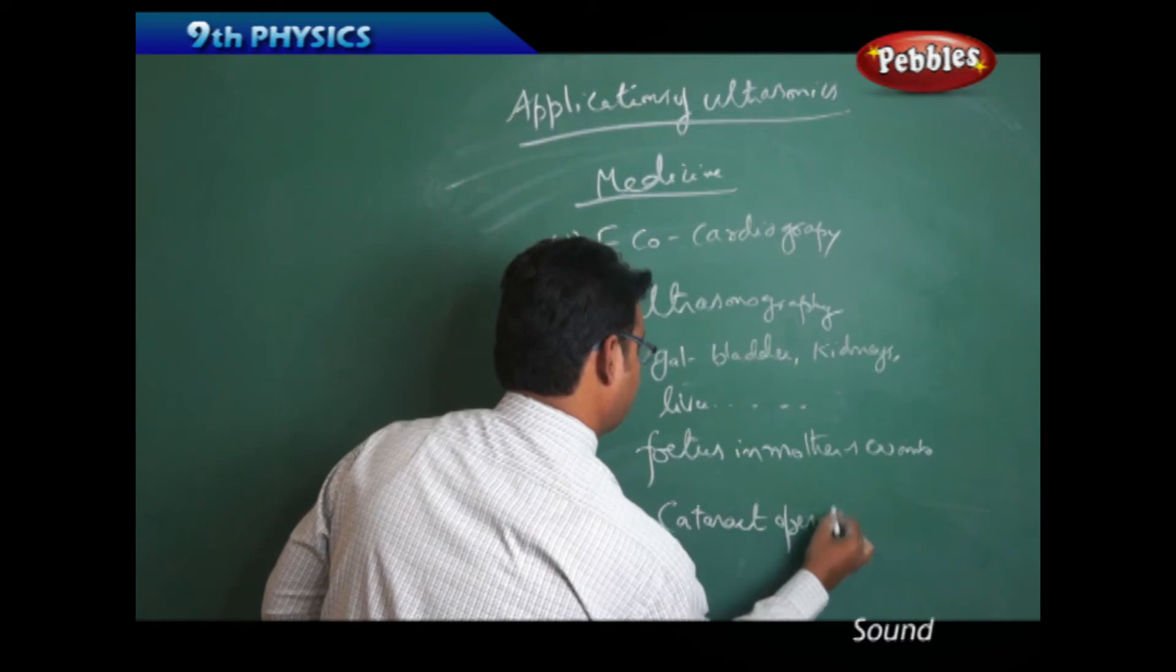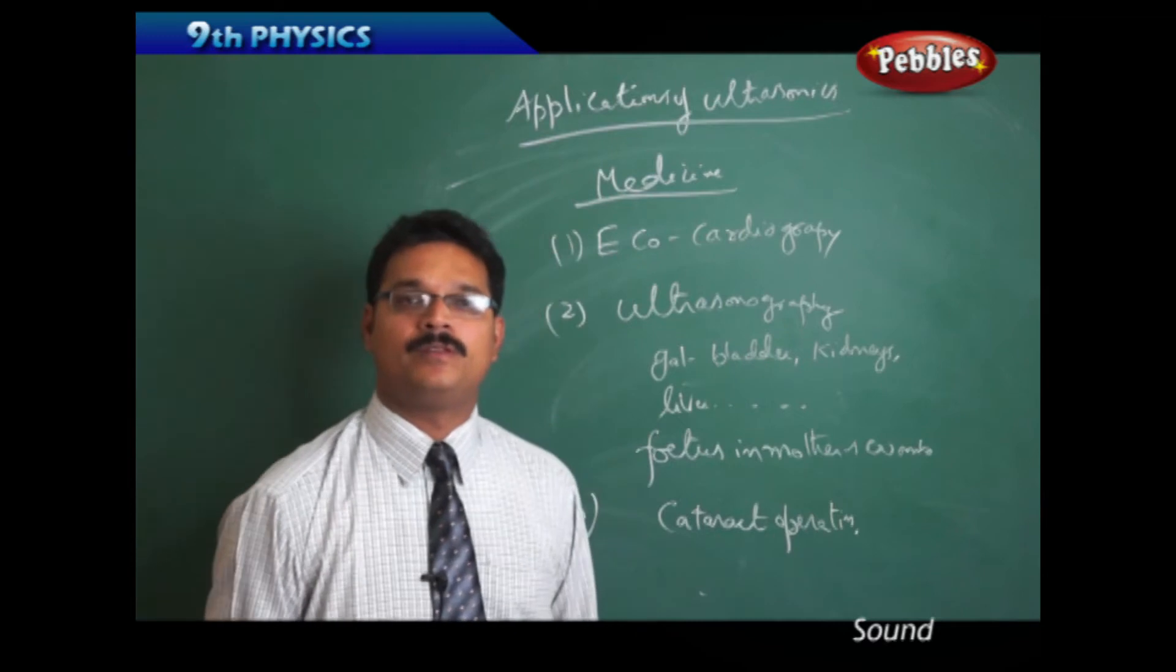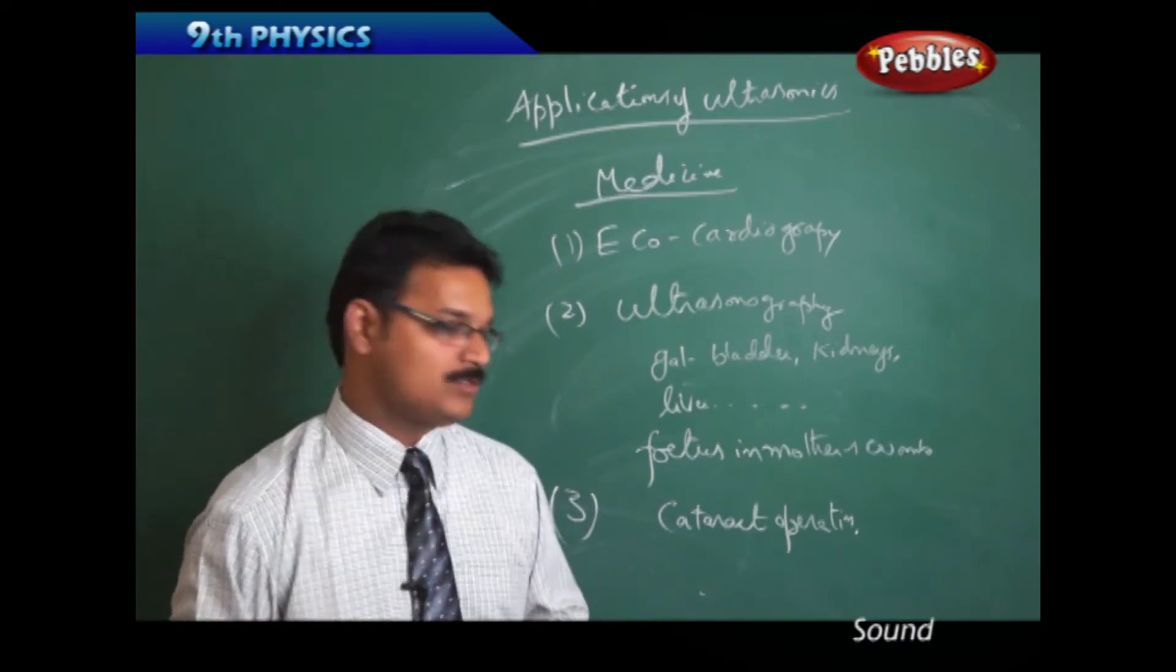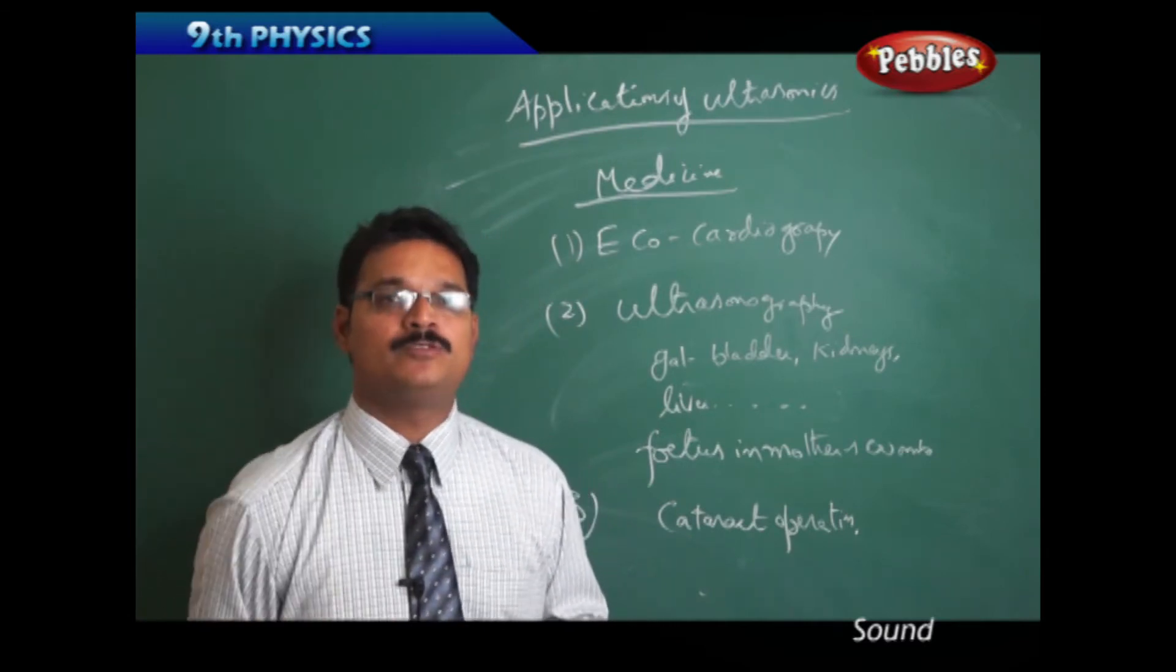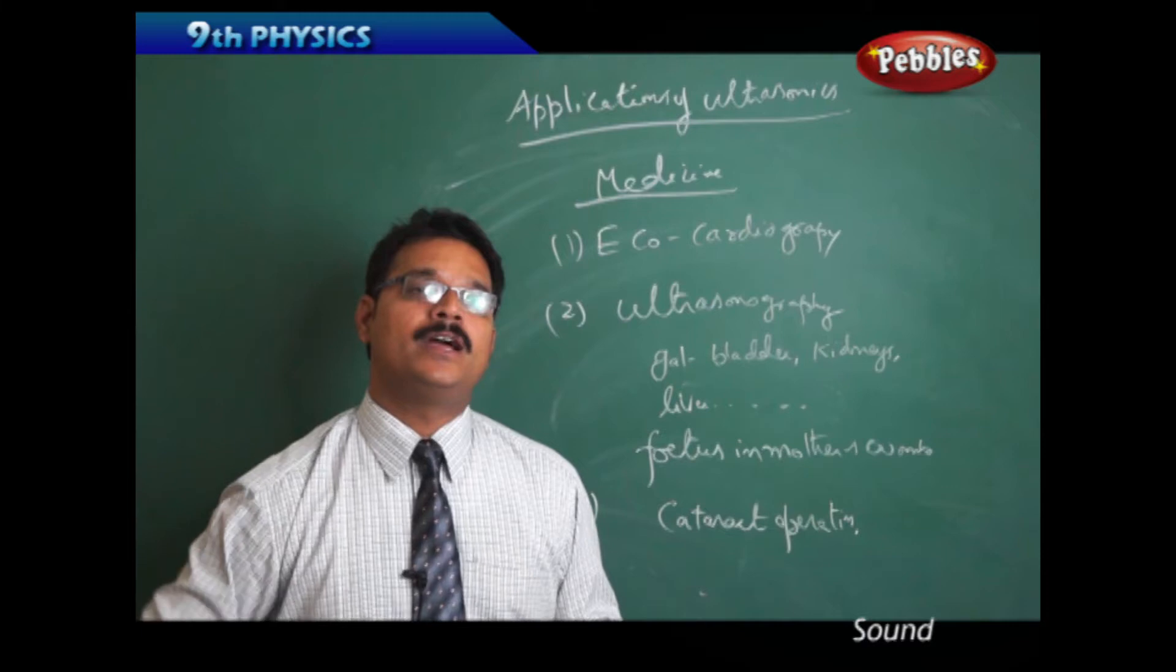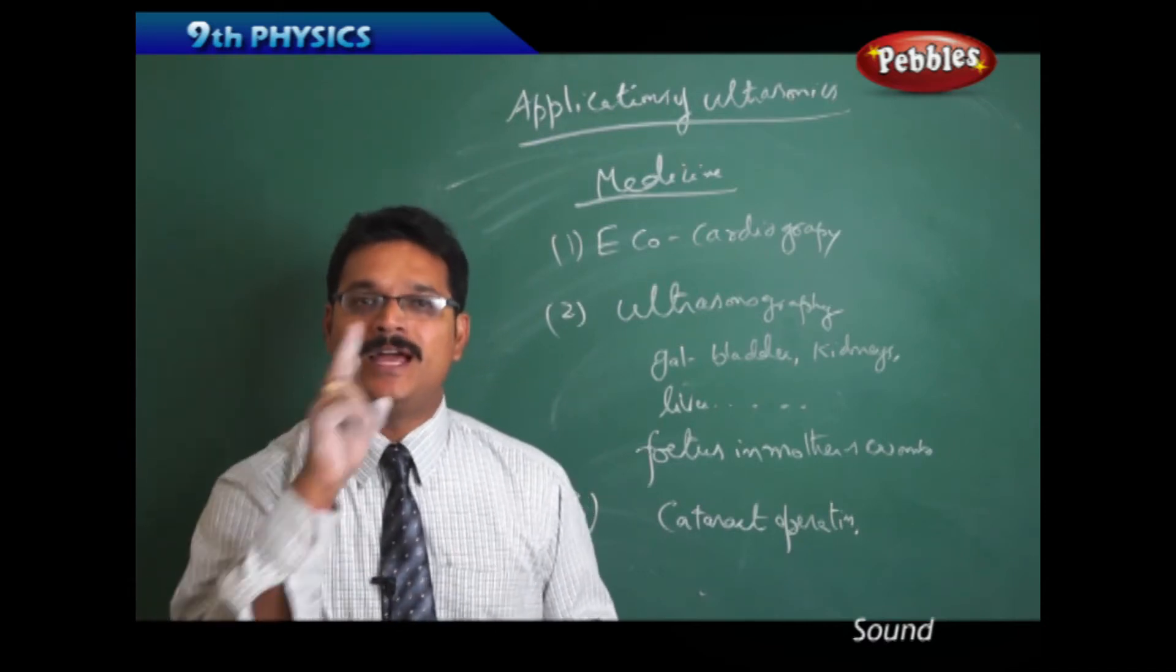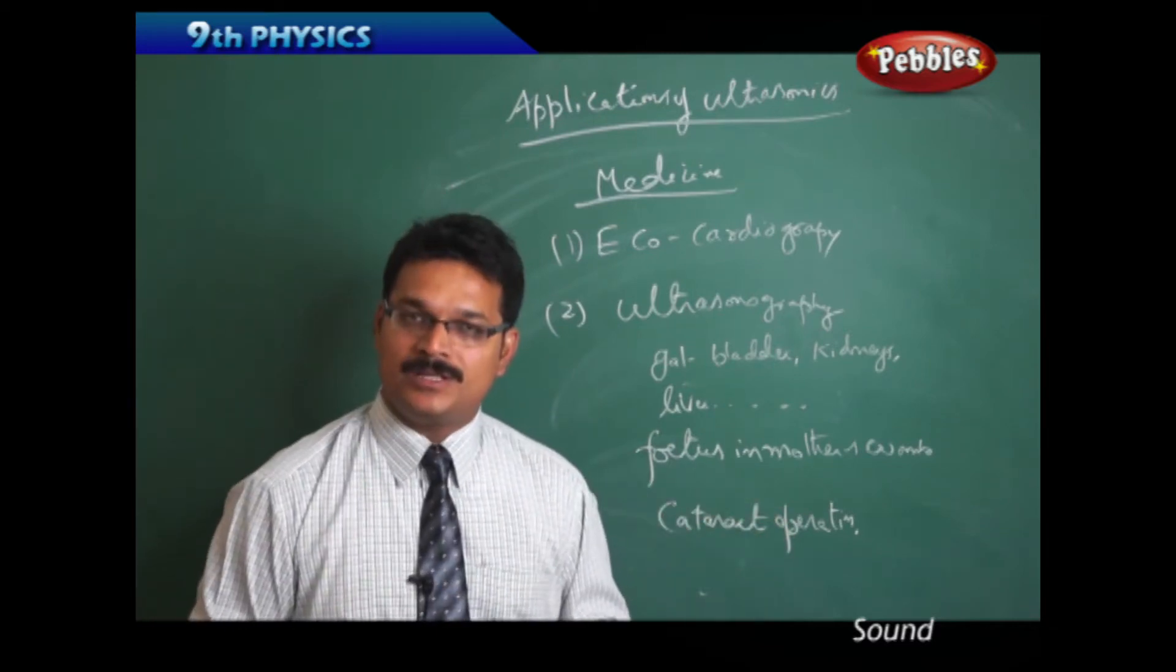The third one is cataract operation. Before, the doctors used to do very major operations to remove the cloud formed on the eye, which is called cataract. But today we are using different types of methods to remove the cataract. One method is ultrasonics. They will send the ultrasonics into the eye, and as ultrasonics are of high frequency, they will make the cataract cloud vibrate so that they will divide the cataract layer into many pieces and remove it.